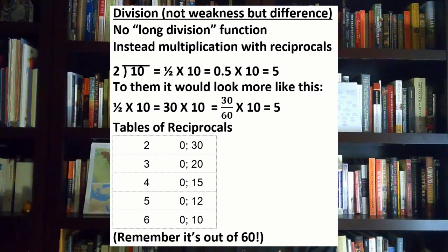These reciprocals can get really complicated. There have been tons of tables found of reciprocals. Just remember that it's always out of 60. So if you've got the reciprocal of 3, that's 0.20 because it's over 60. 4, the reciprocal would be 0.15 because it's 15 out of 60. This goes back to my first video where you really have to know the sexagesimal system. Reciprocals in practice were probably most commonly used for calculating interest.